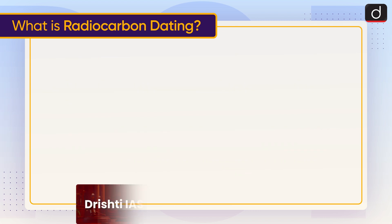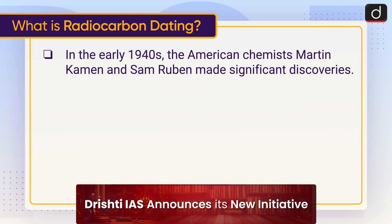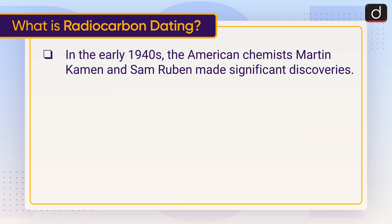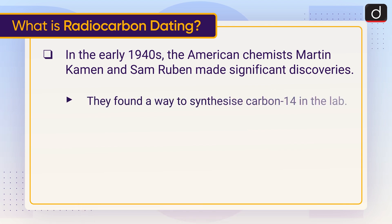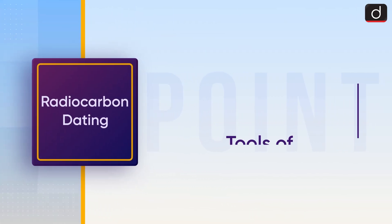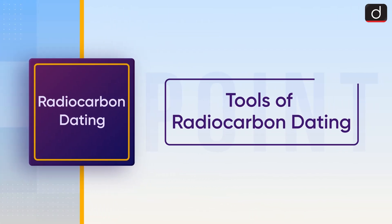In the early 1940s, American chemists Martin Kamen and Sam Ruben made significant discoveries. They found a way to synthesize carbon-14 in the lab and discovered that the time taken to decay to half its original mass was around 5,000 years. Now moving on to the tools of radiocarbon dating.